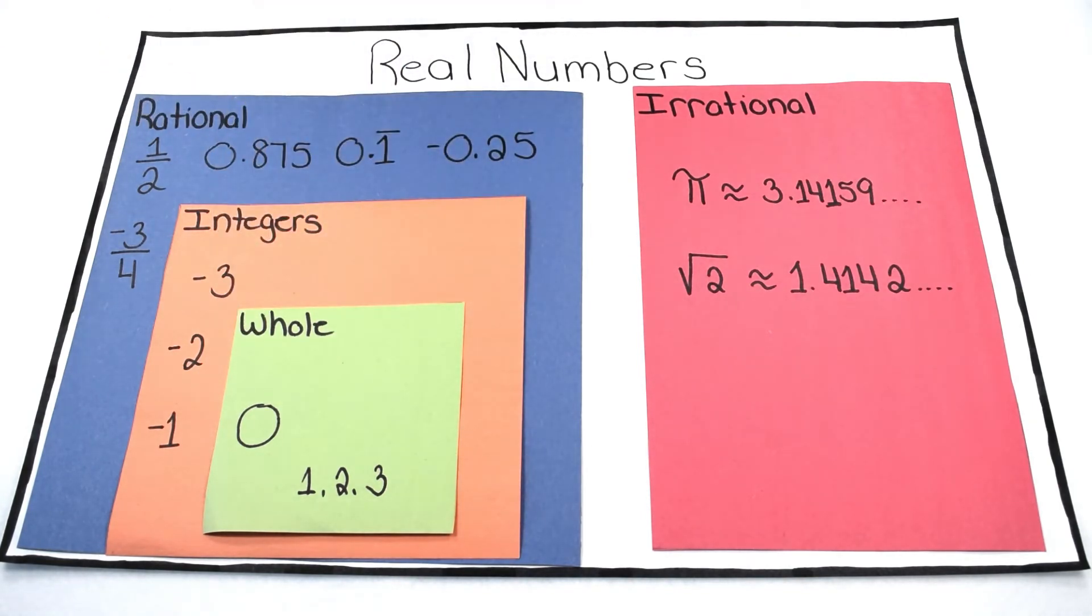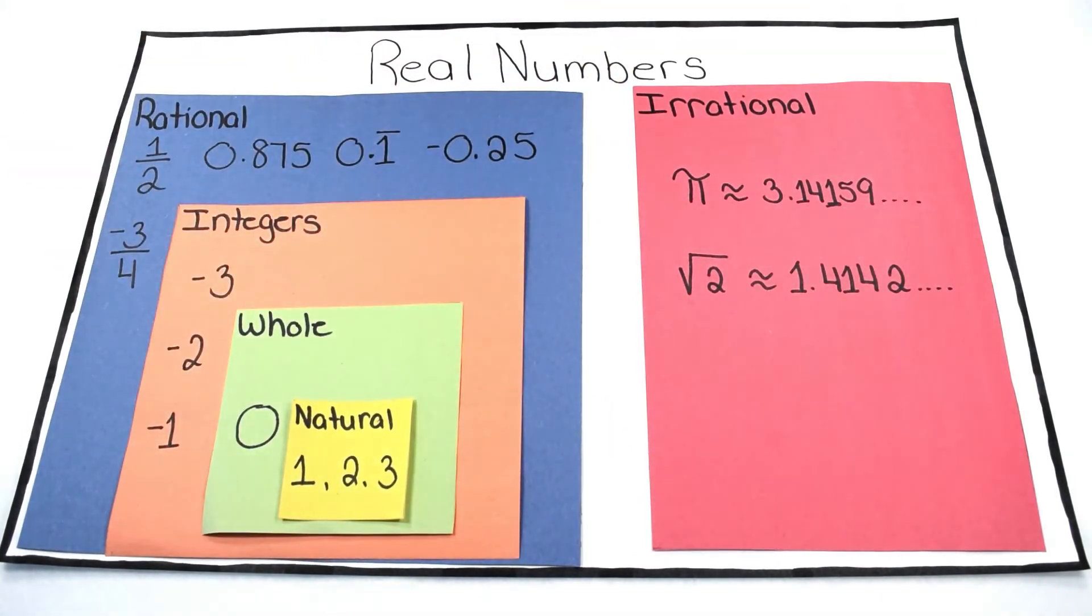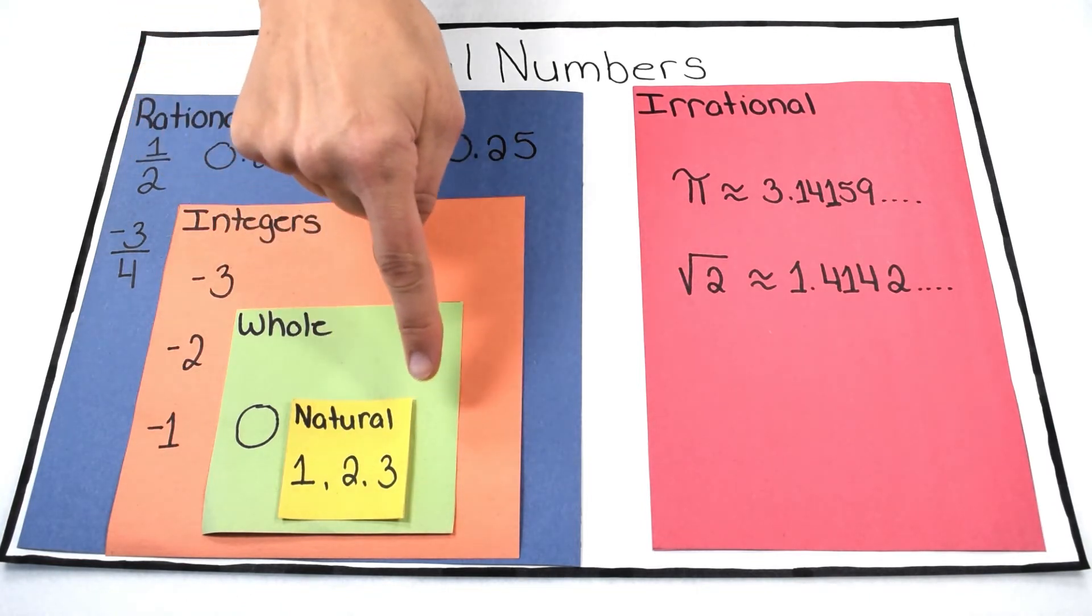We can break whole numbers down into one more subcategory called natural numbers. Natural numbers are frequently referred to as the counting numbers, as they include all whole numbers one and greater.